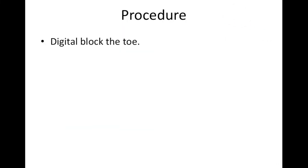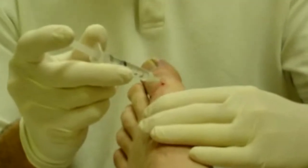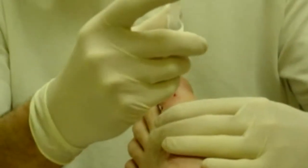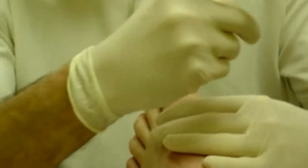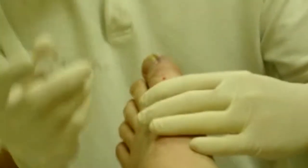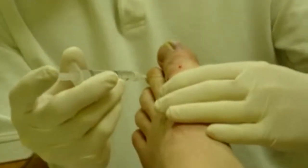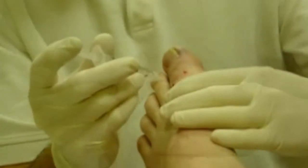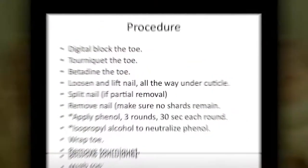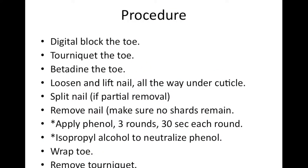For the procedure itself, first we want to do our digital block. We prep the toe and then perform the block — digital blocks are covered in a separate topic. In this example, the doctor first injected along the medial aspect of the toe, then the dorsal, and then the lateral. Let's put this all together to see what it looks like.